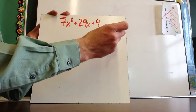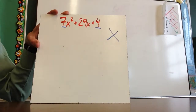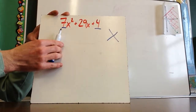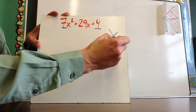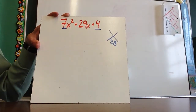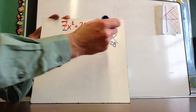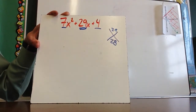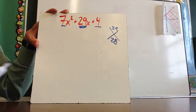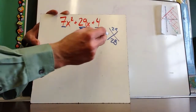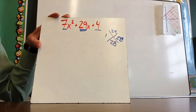I'm going to take this number times this number. If you remember before, it was 1 times that. Now it's going to be 7 times 4, and this is going to give me 28. And then I've got to take this number that's in the middle, and it's going to be a positive 29 up there. So I'm looking for two numbers that when multiplied together give me 28, and when added together give me 29, and those numbers would be 1 and 28.